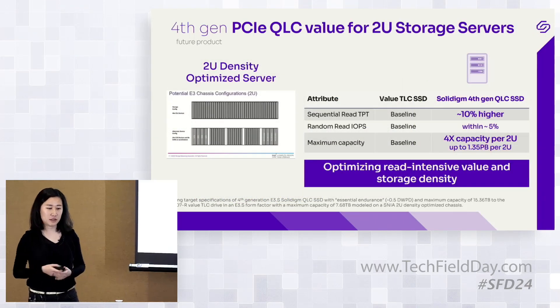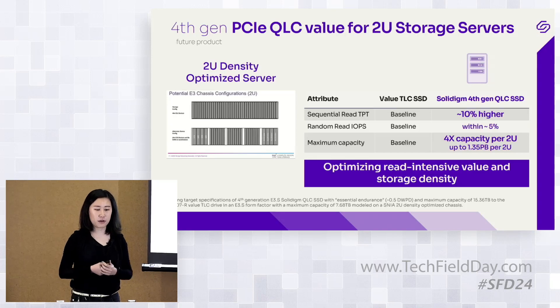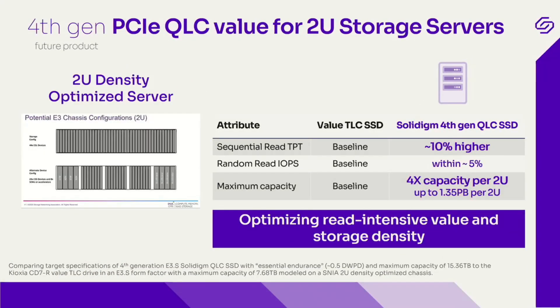At system level, when you put these large drives into a system, this is a reference architecture for a 2U density-optimized server with E3.S and E3.L. With a 30-terabyte Essential Endurance E3.S, you can fit about 44 E3.S drives in that chassis, giving you 1.35 petabytes in a 2U. If you put in 60-terabyte drives, that's 2.7 petabytes in 2U.